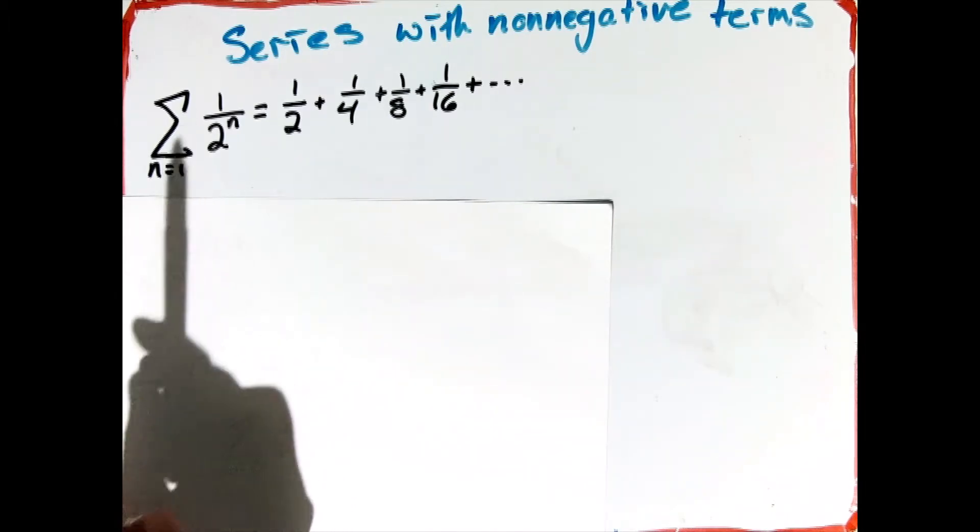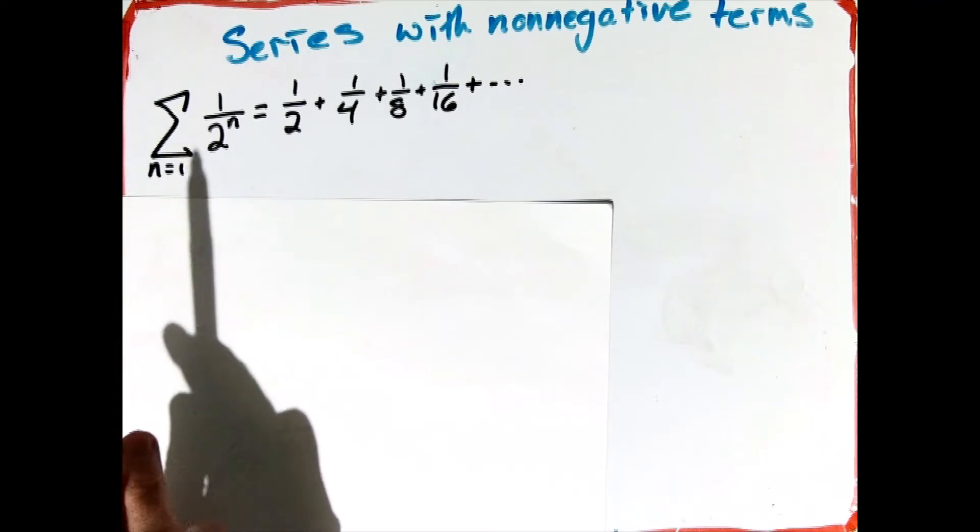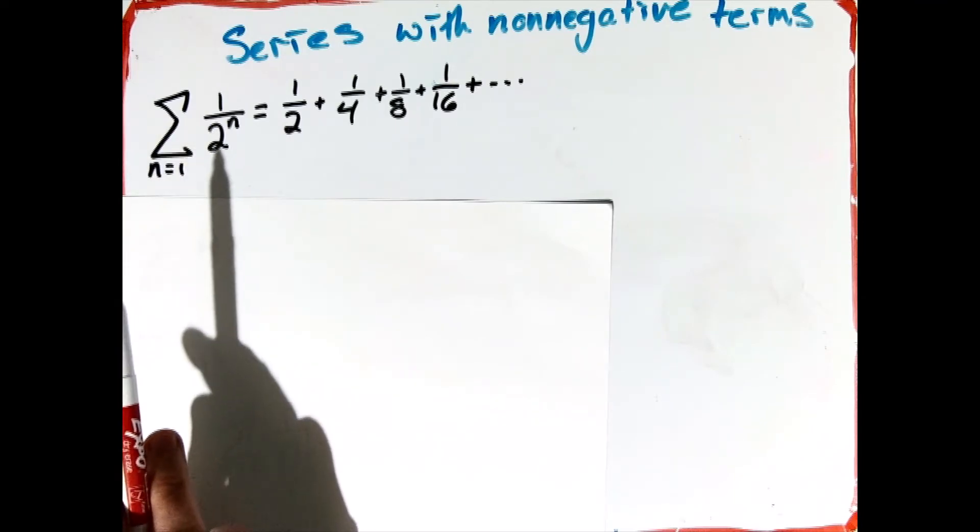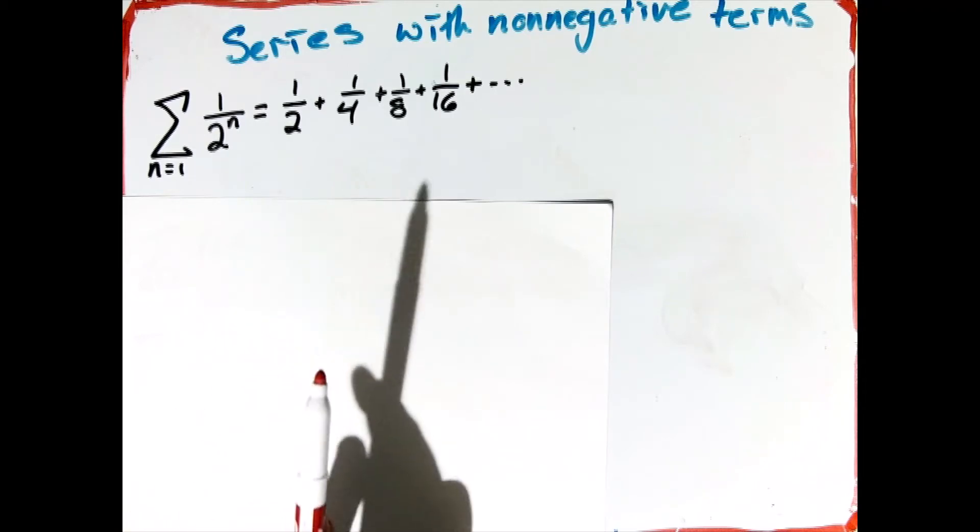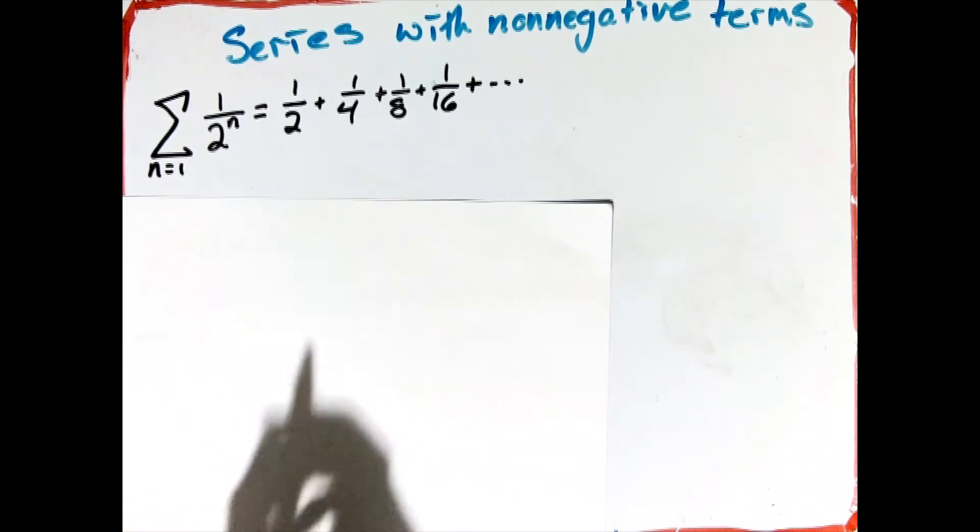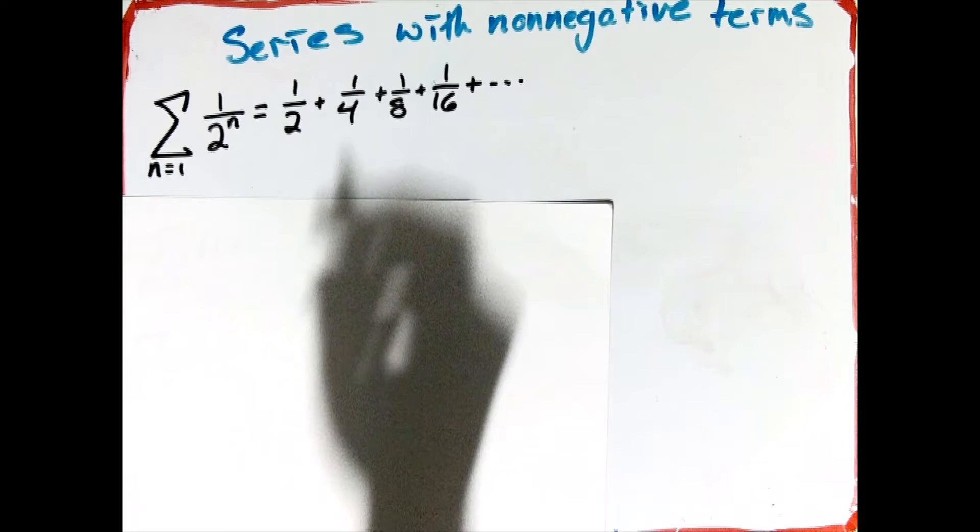So here's my first one. I've got the summation from n equals 1 up to infinity of 1 over 2 to the n, so my terms look like a half plus a fourth plus an eighth plus a sixteenth, and so forth.